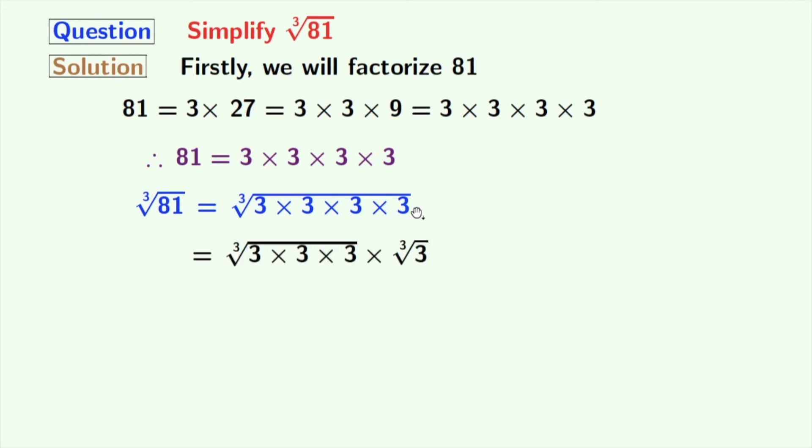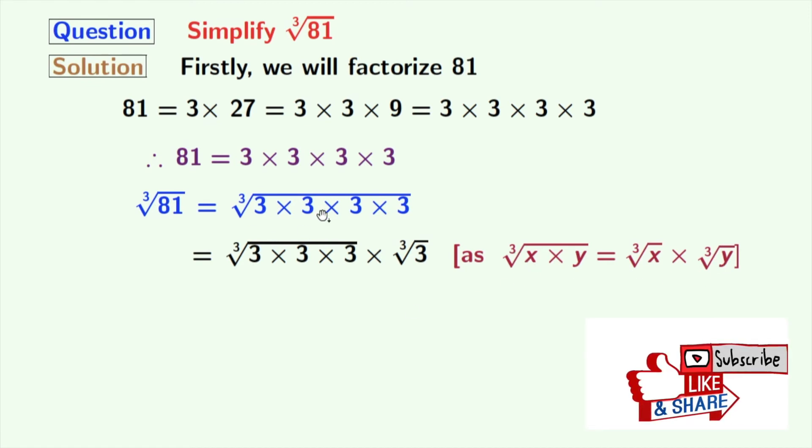After grouping, we get cube root of 3 times 3 times 3 times cube root of 3. As we know that cube root of x times y is equal to cube root of x times cube root of y. Here x is 3 times 3 times 3 and y is 3.